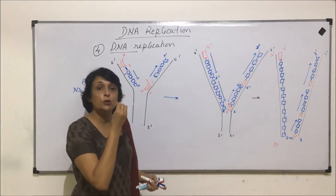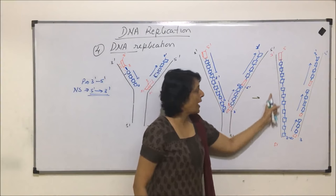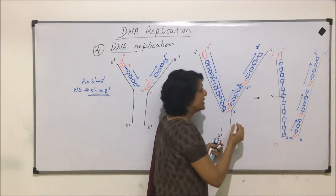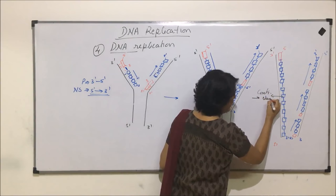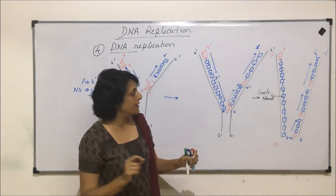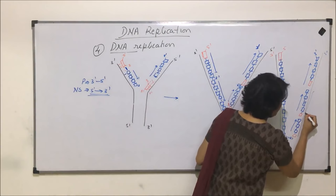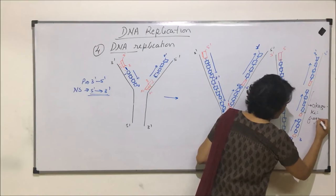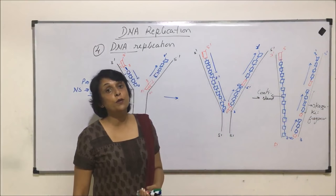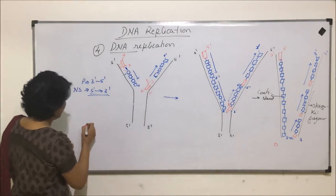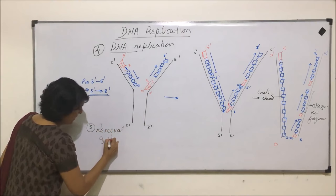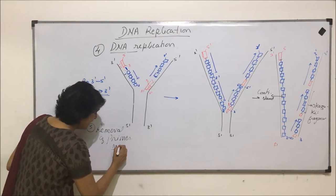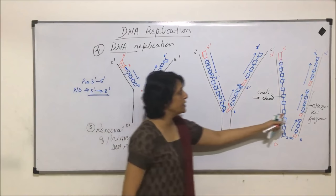The direction is the same — from five prime towards three prime. This parent strand has its fifth end here, third here, and it grows towards its third end. So this is how the two strands are formed: one strand is formed in a continuous manner, and that is why we call this newly synthesized DNA strand the continuous strand. The other one is still not a full DNA strand — it is still in the form of pieces. This piece of DNA is known as an Okazaki fragment. Then these primers are to be removed, which is step number five: removal of the primer.